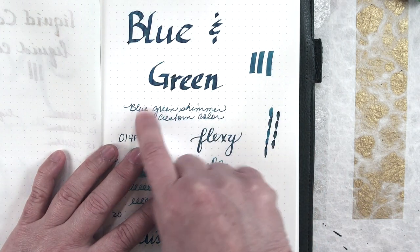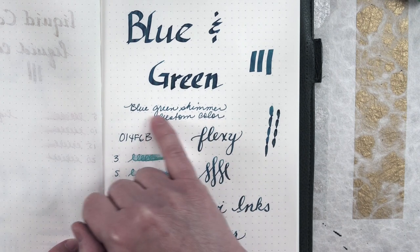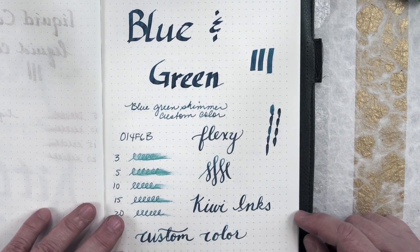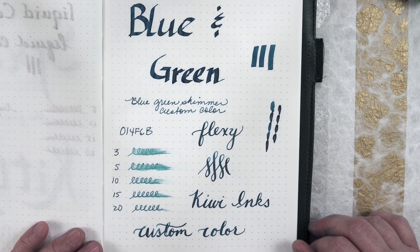Here it is with me playing around with a Pilot 3.8. And the shimmer is kind of hard to pick up, but I kind of like that. And in the flex writing, there was a little more shimmer in that.